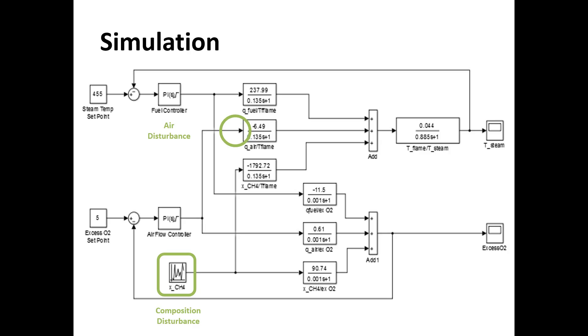You'll also notice that the amount of air acts as a disturbance within the steam temperature loop because extra air is just wasted energy that we're sending out in nitrogen. Also the amount of fuel acts as a disturbance within the air loop because more fuel requires more oxygen.